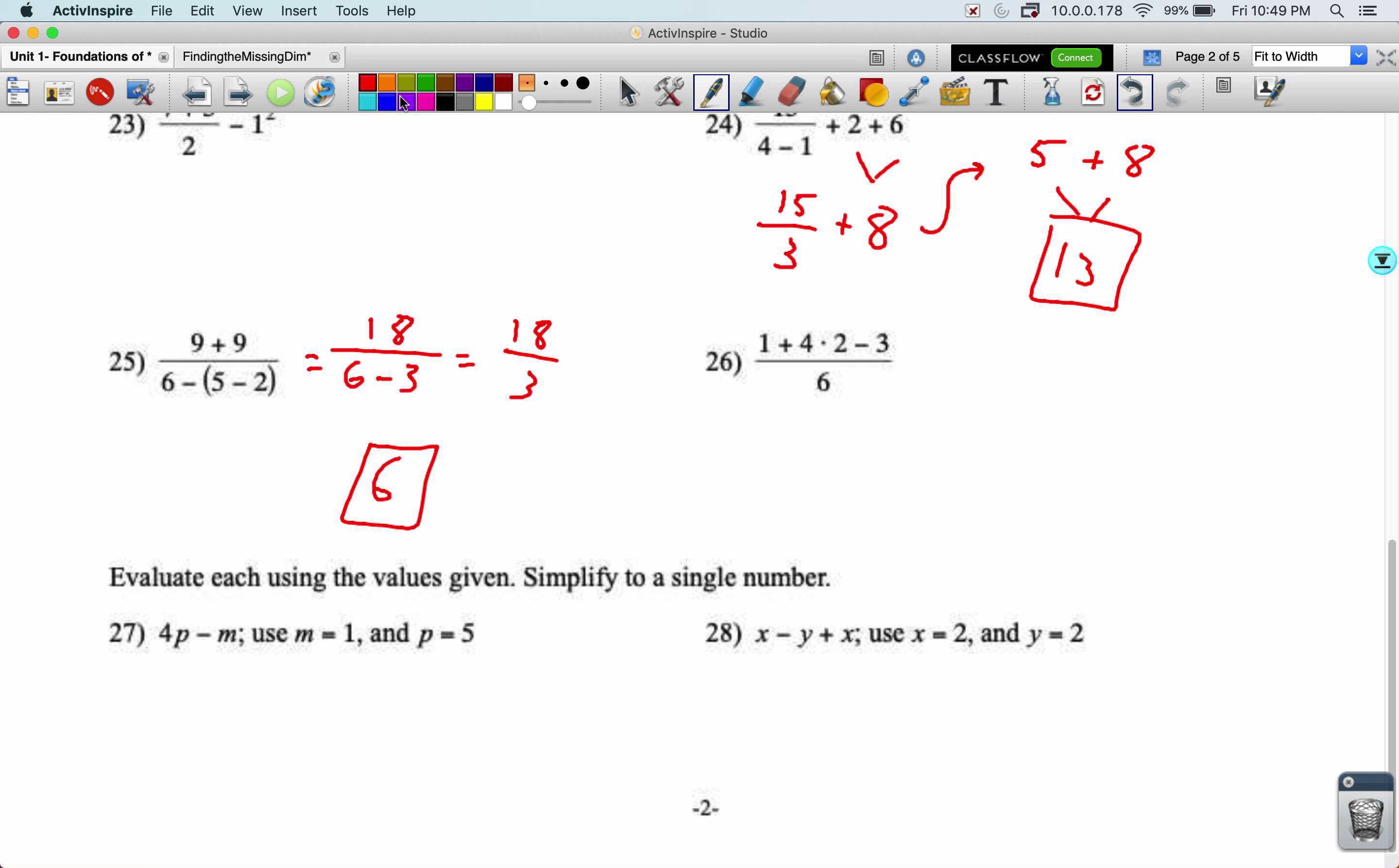Let's say 26. I have to do the multiplication on the top first. I've got one plus eight minus three all over six equals that's going to be, let's just do this in our head. One plus eight is nine minus three is a six. So six over six equals one.